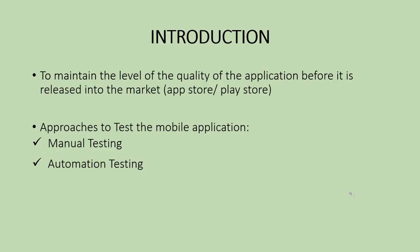Now we will start the introduction. If you are not sure, subscribe, like, share, comment. Let's start. The next question is: what is mobile app testing? We will do the application testing — the application testing is available. We will do both manual testing and automation testing. Manual testing is where a human being manually tests. Automation testing is where you use a programming language, framework, and scripts to prepare and execute the tests.